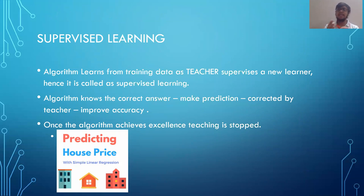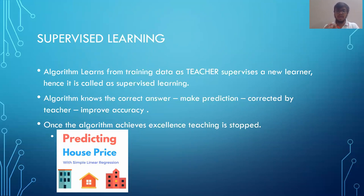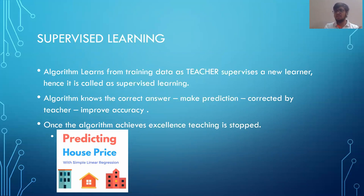If you have two images — cat and dog — each with a label, and by mistake your algorithm labels the cat image as 'dog', your accuracy decreases. This acts as supervision: if the answer is correct, go ahead; if it is wrong, go back, make changes in your learning, and improve the accuracy. Once the algorithm performs excellently — for example, scoring 10 out of 10 on a test — the teaching is stopped, the same way supervised teaching stops for a student after a certain grade.